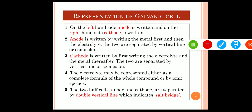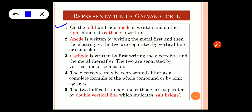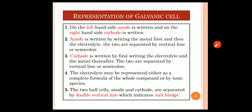Let us review the rules one by one. First: anode is written on the left hand side and cathode on the right hand side. Second: anode is written by writing metal first then electrolyte, separated by a vertical line or semicolon. Third: cathode is written by writing electrolyte first then the metal, separated by a vertical line or semicolon. Fourth: the electrolyte may be represented either as the complete formula or as ionic species. Fifth: the two half cells, anode and cathode, are separated by a double vertical line representing the salt bridge.